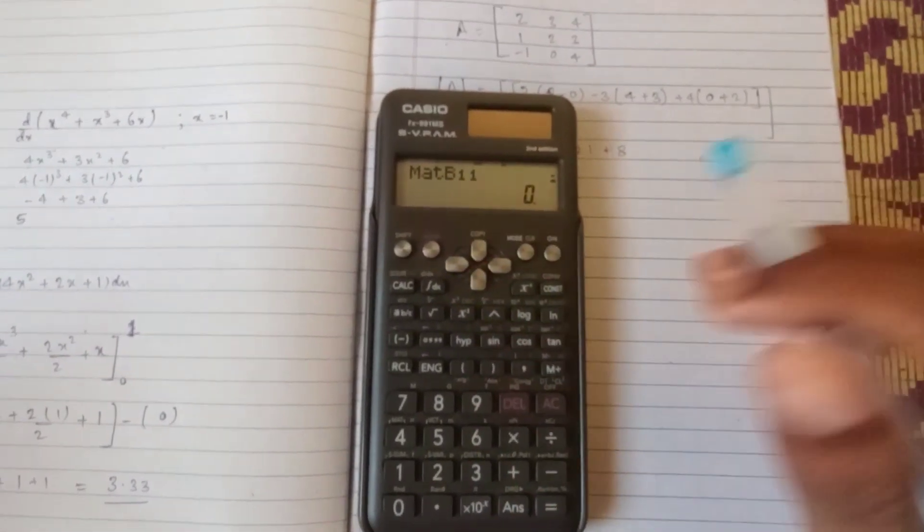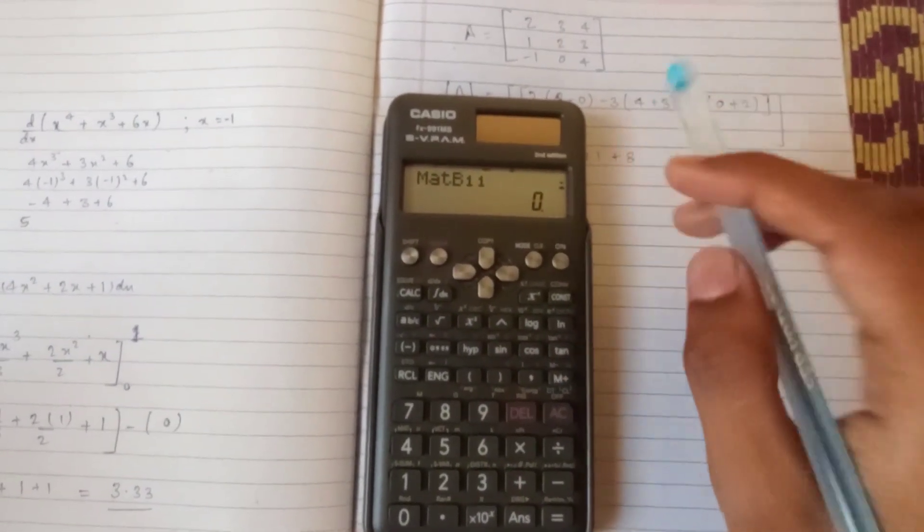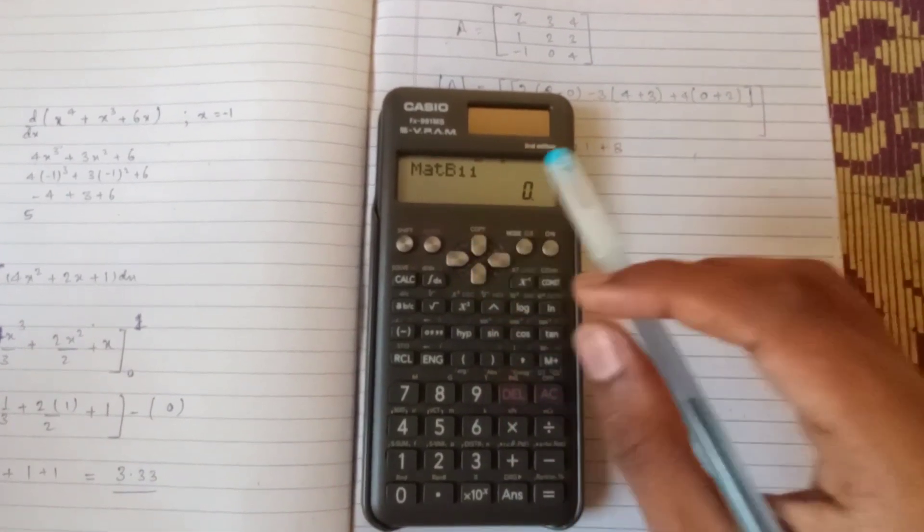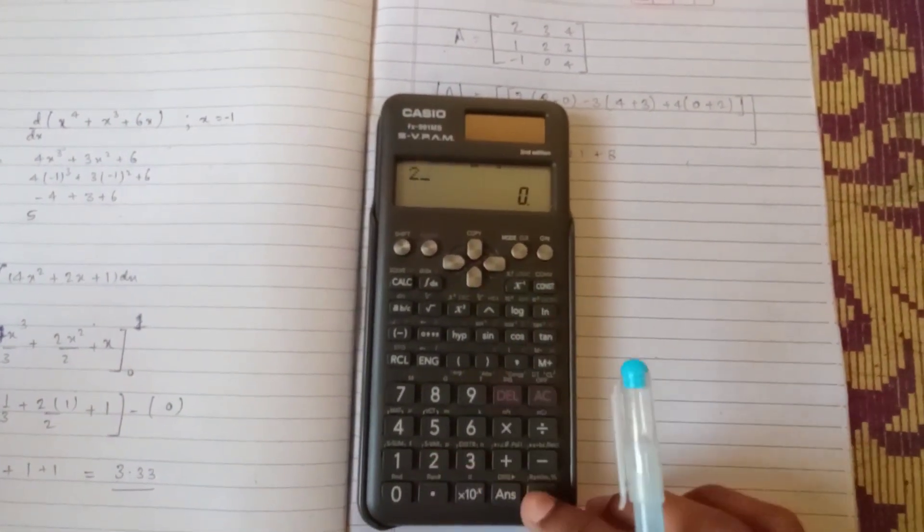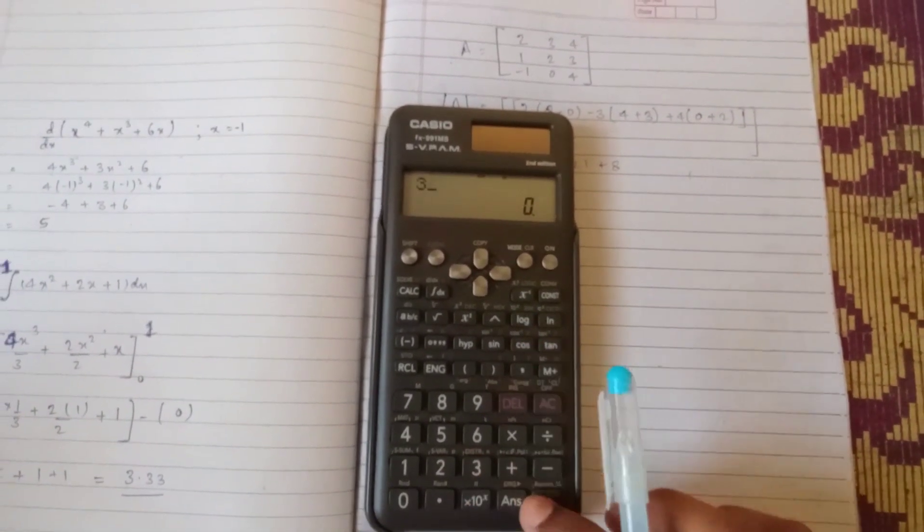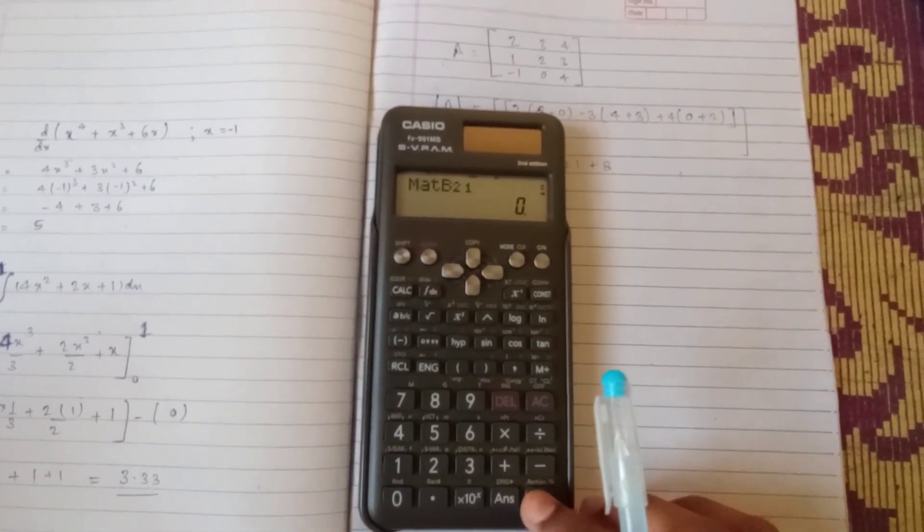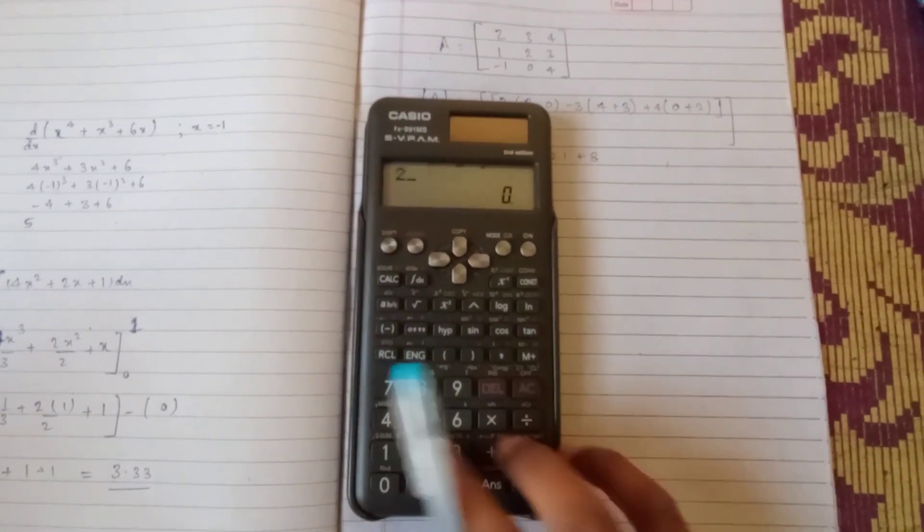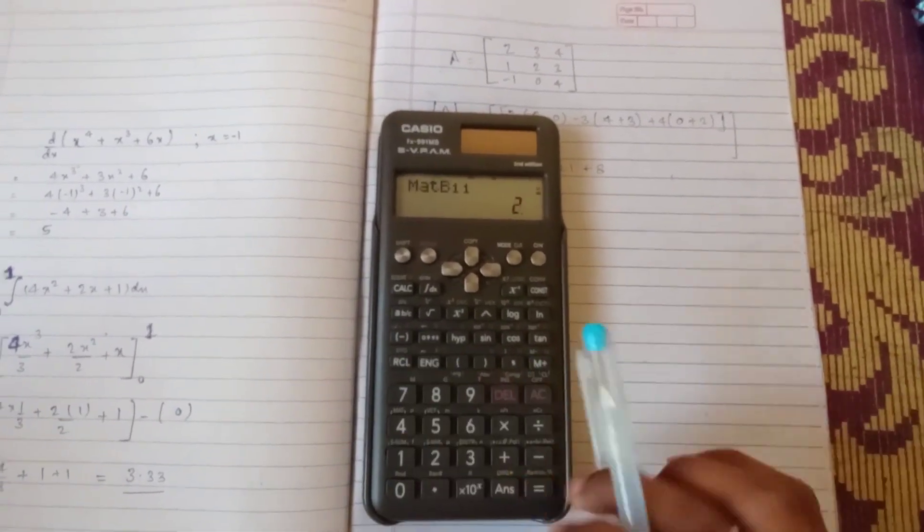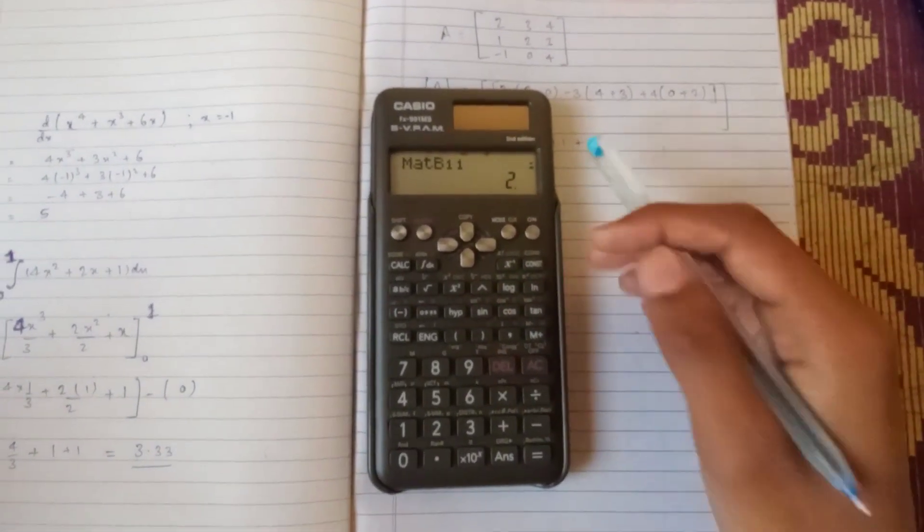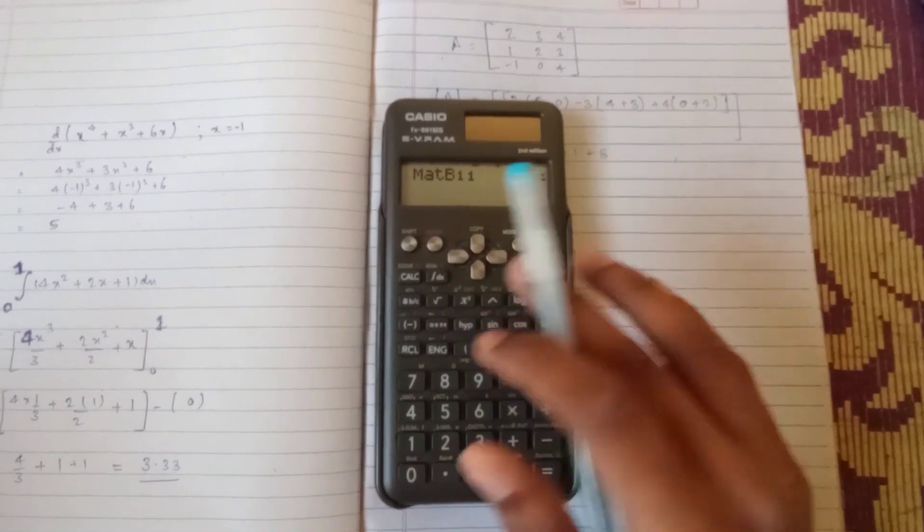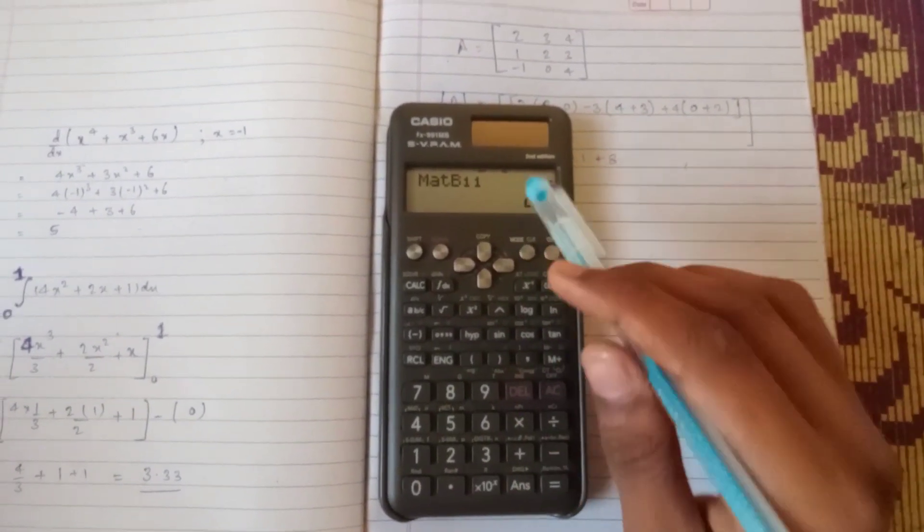Now just put all the inputs of the matrix given in the question in the calculator accordingly. B1 1, 2. B1 2, 3. B1 3, 4. Like that. We have completed the input of all the digits in the matrix in calculator.